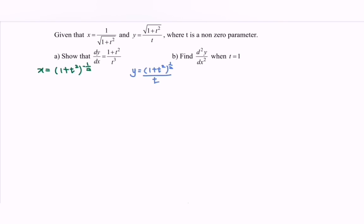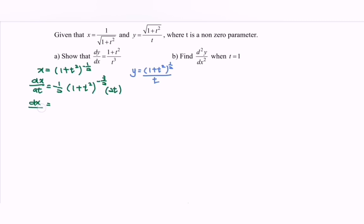Differentiate x with respect to t. So dx/dt is equal to negative 1 over 2, bracket (1 plus t squared) to the power of negative 3 over 2, then differentiate the internal function to get 2t. Rewriting, dx/dt is equal to negative t over (1 plus t squared) to the power of 3 over 2.